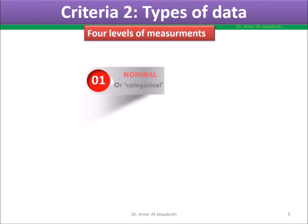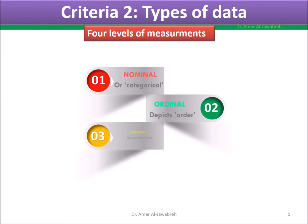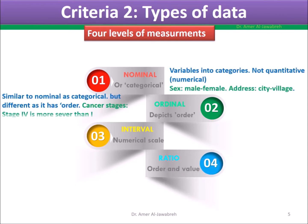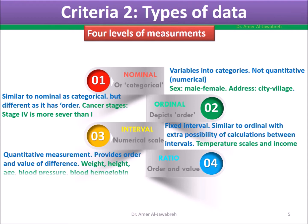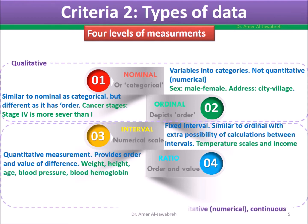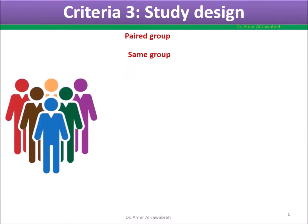Criteria 2: types of data — four levels of measurement. 1) Nominal or categorical; 2) Ordinal, depicts order; 3) Interval, numerical scale; 4) Ratio, order and value. Examples: nominal like sex (male and female), ordinal like cancer stages, interval like temperature scales, and ratio like weight and height. Levels 1 and 2 are qualitative, while 3 and 4 are quantitative.